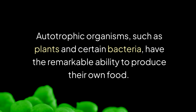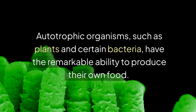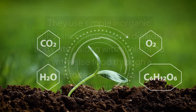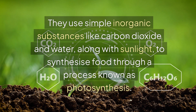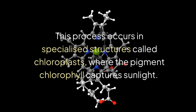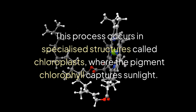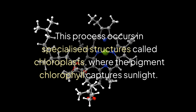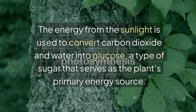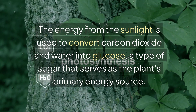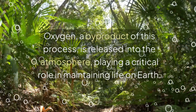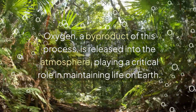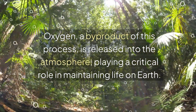Autotrophic organisms, such as plants and certain bacteria, have the remarkable ability to produce their own food. They use simple inorganic substances like carbon dioxide and water, along with sunlight, to synthesize food through a process known as photosynthesis. This process occurs in specialized structures called chloroplasts, where the pigment chlorophyll captures sunlight. The energy from sunlight is used to convert carbon dioxide and water into glucose, a type of sugar that serves as the plant's primary energy source. Oxygen, a byproduct of this process, is released into the atmosphere, playing a critical role in maintaining life on Earth.